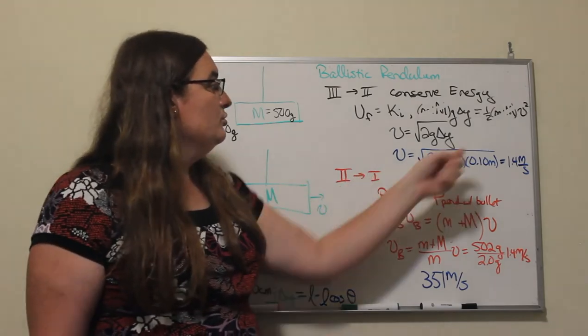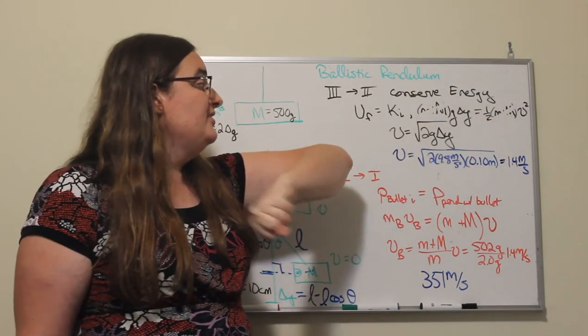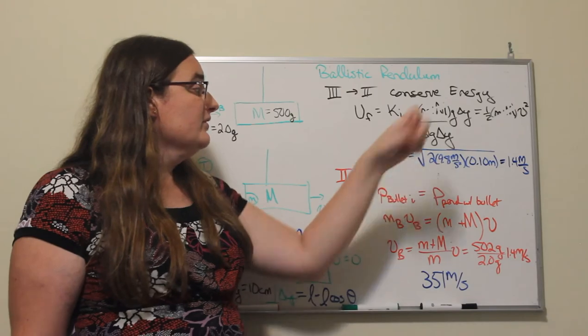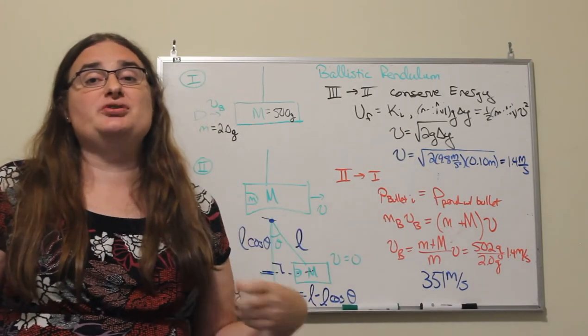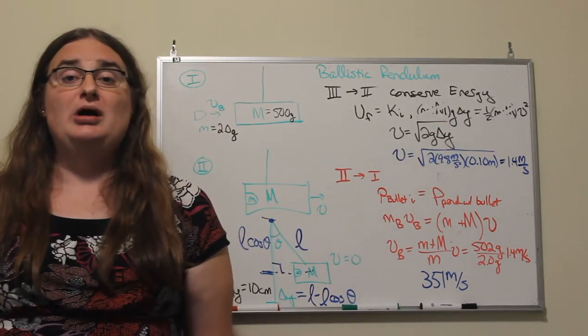Would be equal to, multiply both sides by two and take the square root, the square root of two times the strength of gravity times our change in y.